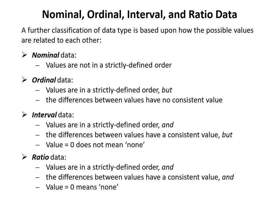The last type of classification we look at in this lesson is based upon how possible values in the data set are related to each other. There are four general categories: nominal, ordinal, interval, and ratio data. Going from the lowest form of data to the highest, we will take a look at examples of each and discuss their key characteristics.